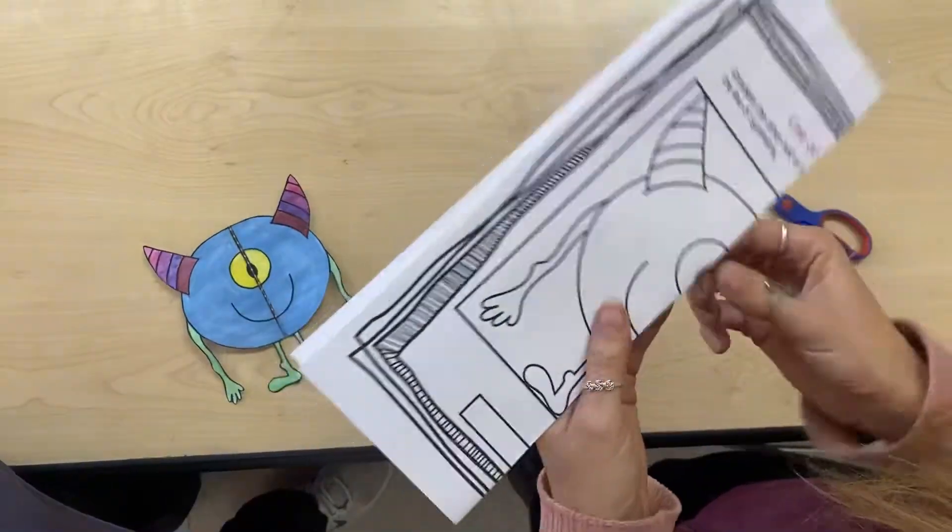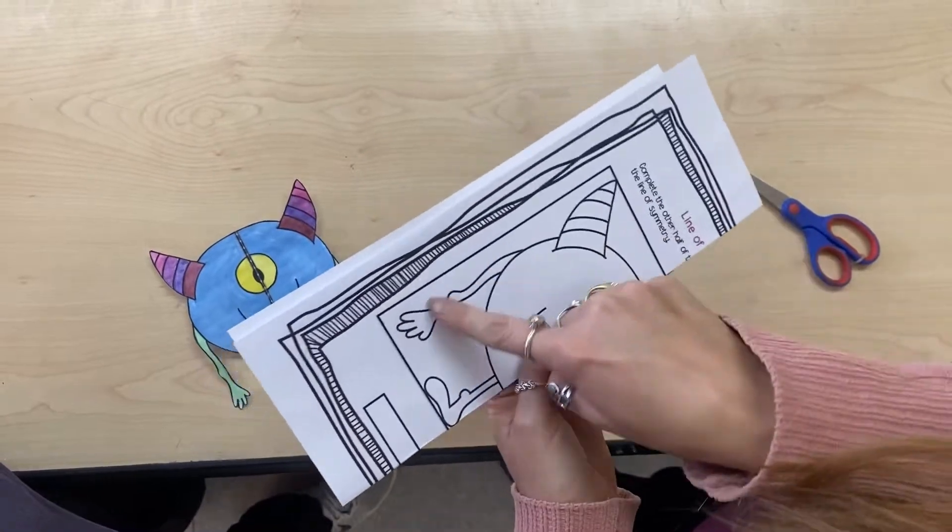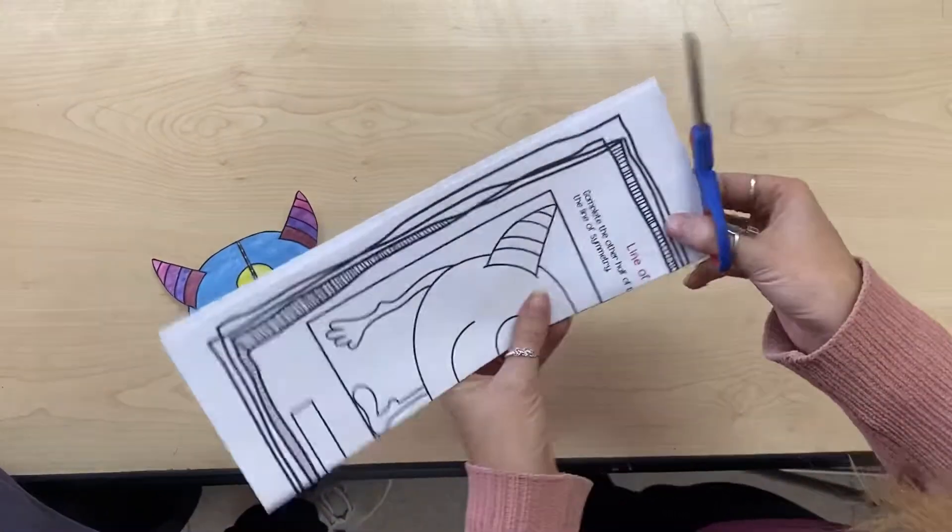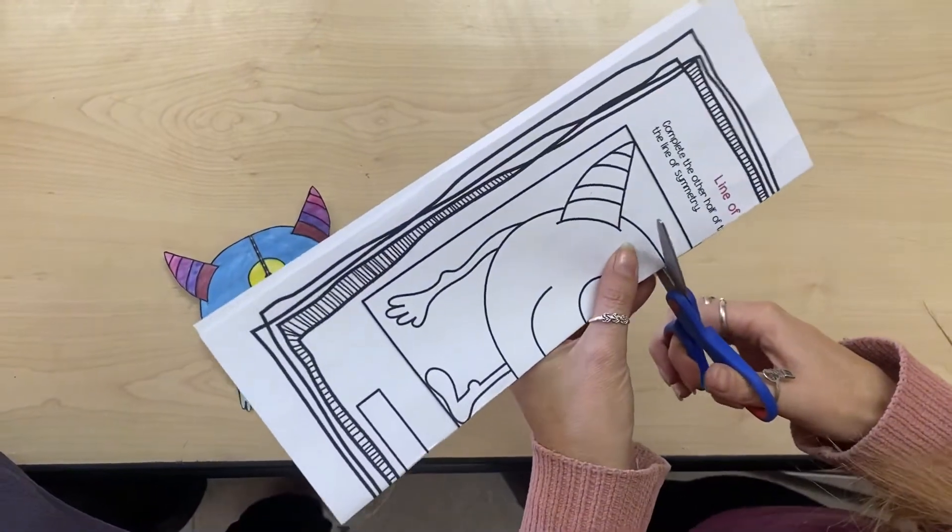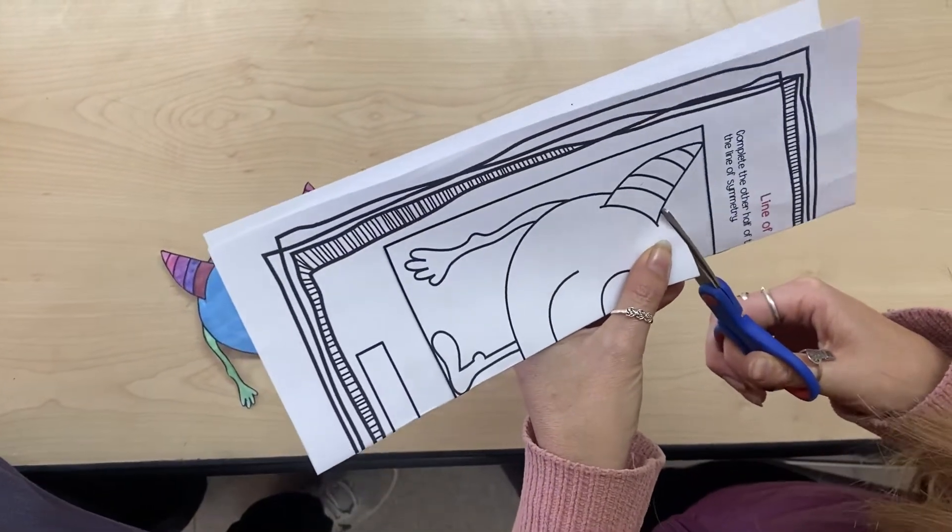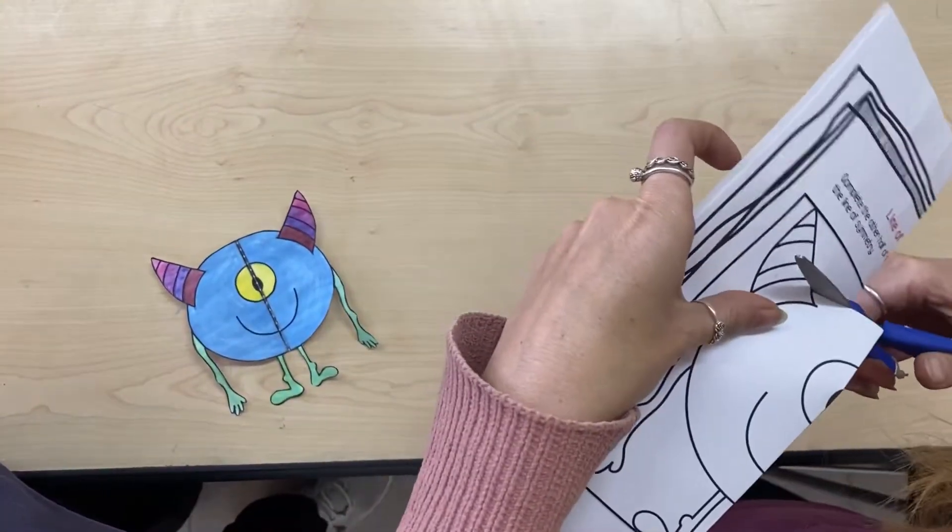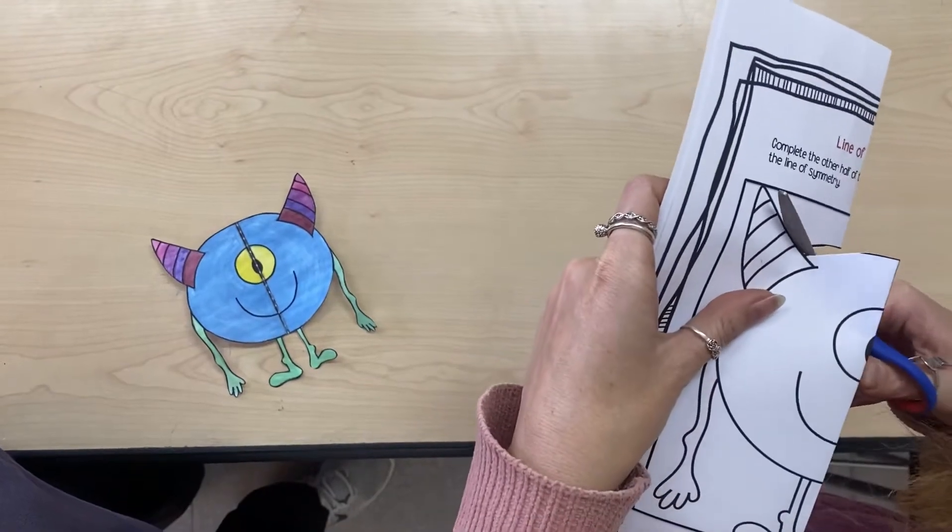And then what I'm going to do is I'm going to cut around the side that I can see, okay? So I'm going to get started on cutting now, all the way around my monster here.